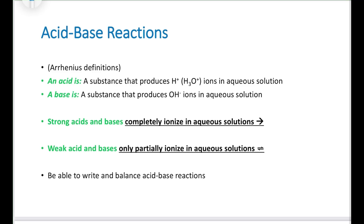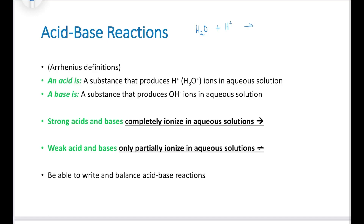We also have straight acid-base neutralization reactions. We have three different definitions for what an acid or base is. The main definition used in Gen Chem 1 is called the Arrhenius definition. The Arrhenius definition of an acid states that a substance that produces H+ or H3O+ in aqueous solution is an acid. What's really happening is water comes along and grabs one of these protons, forming H3O+. We use H+ and H3O+ interchangeably. A base is defined as the substance that produces hydroxide ions in aqueous solution.